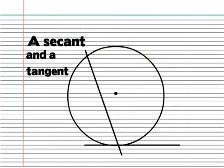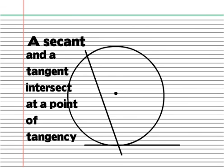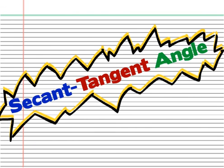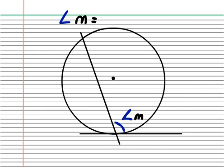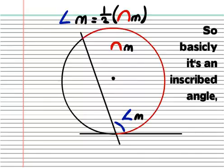When a secant and tangent intersect at a point of tangency, forming a secant-tangent angle, who would have guessed that? The angle formed is half of the intercepted arc. So basically, it's an inscribed angle, but not technically one.